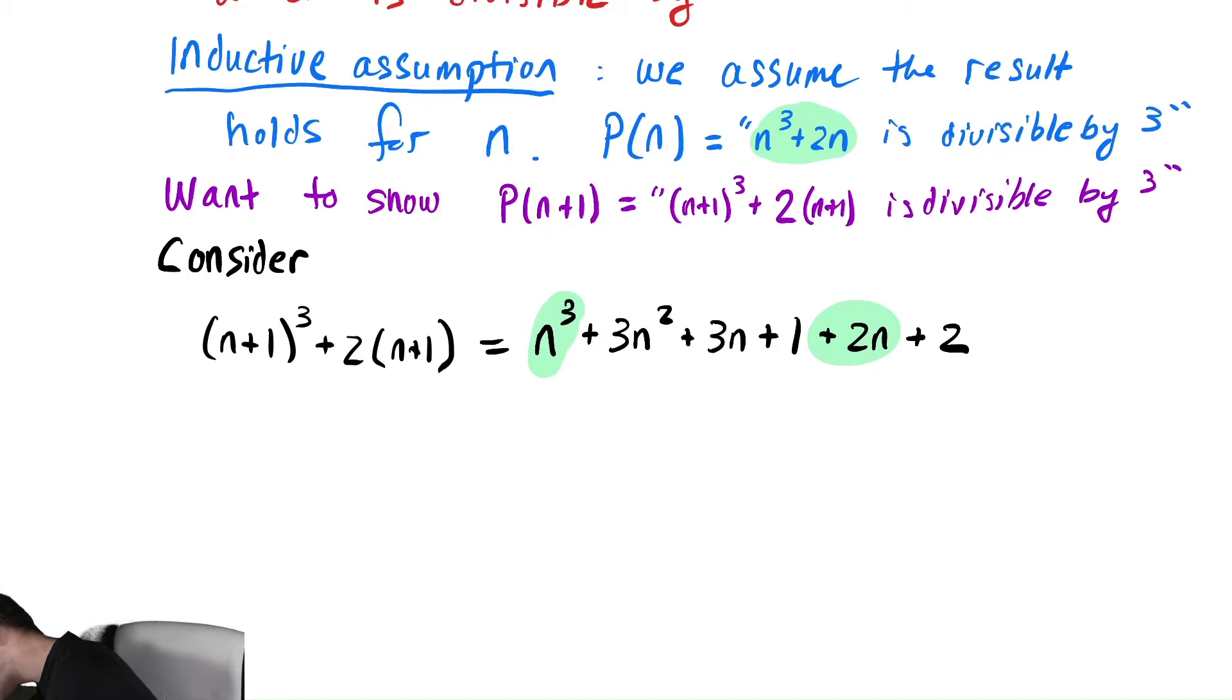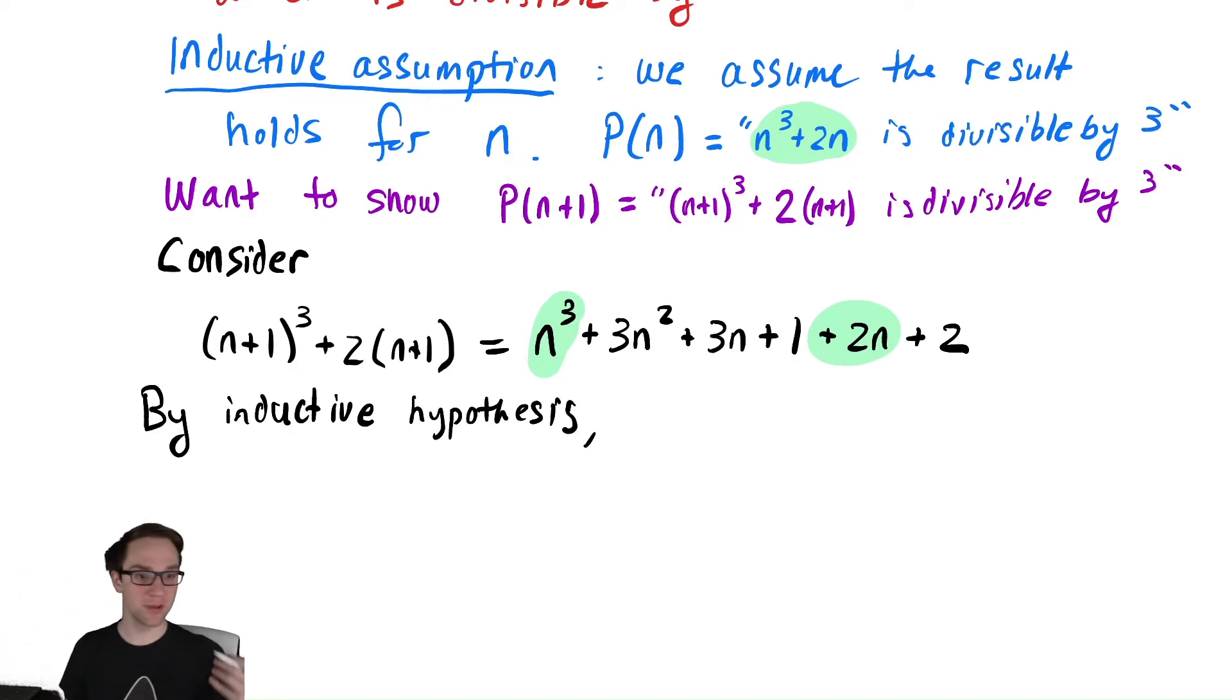So by inductive hypothesis or inductive assumption, by inductive hypothesis—something to indicate that you used the stuff I wrote in blue. Hypothesis. You can say a number is divisible by 3 by writing that it has a number times 3. There exists a k, there exists a k in the integers